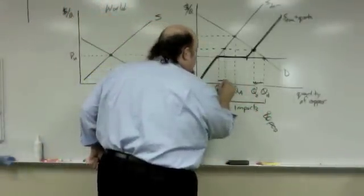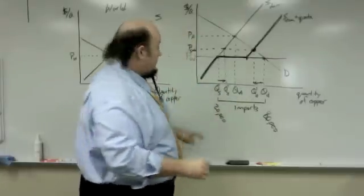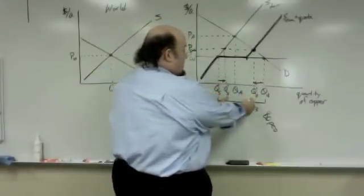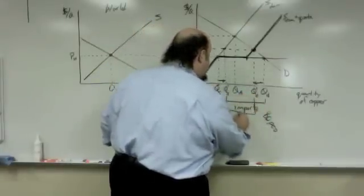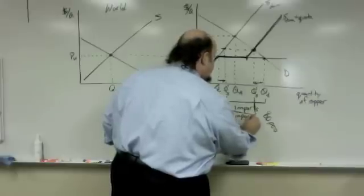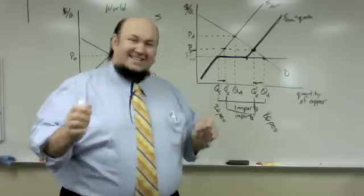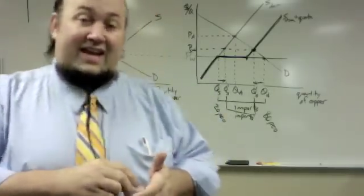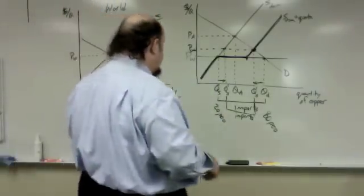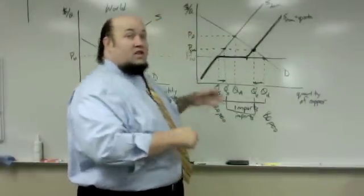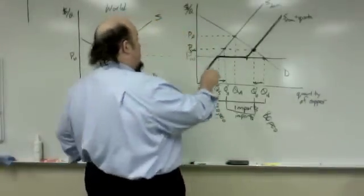So domestic production went up. And QD1 to QS1, our imports have gone down. So that's a quota. That's the big key thing. Now, we've got to look at the welfare analysis on this thing. Let's look at what happened to consumer surplus.